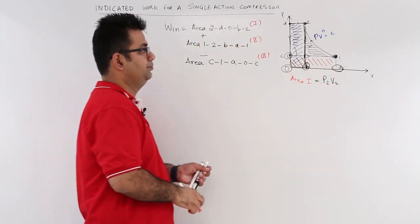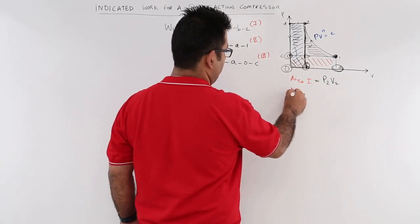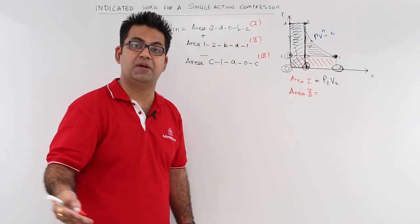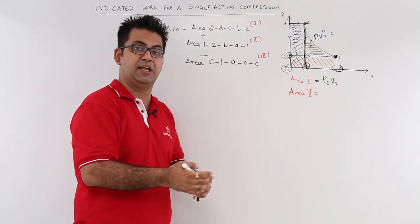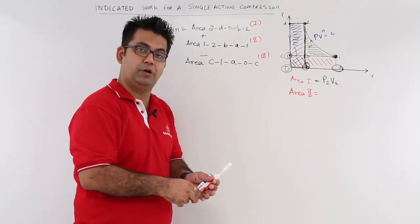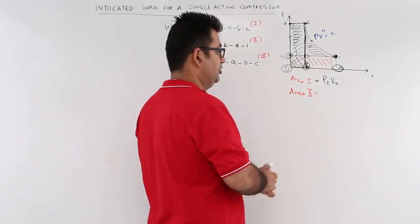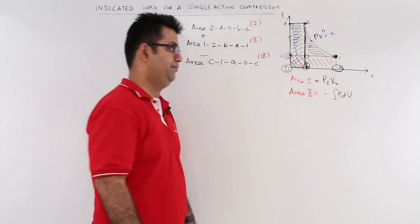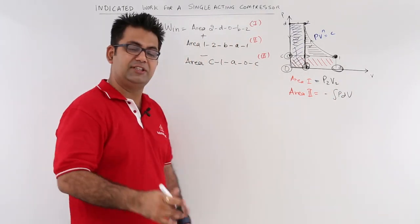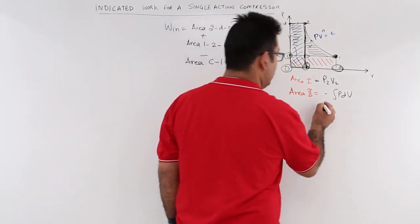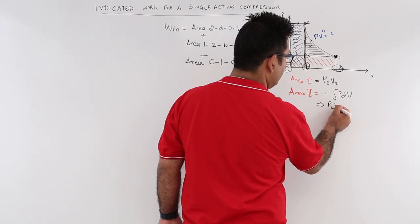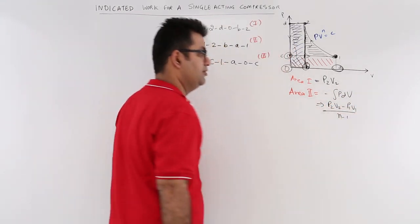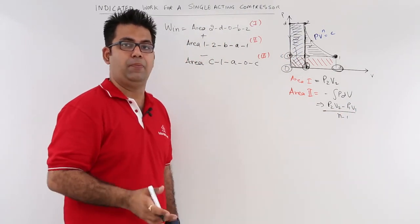What about area 2? Now area 2 would be a negative displacement work because compression is taking place from pressure P1 to pressure P2. So this would be minus PdV. Now because it is a polytropic compression, the value would become P2V2 minus P1V1 upon N minus 1, where N is the polytropic index.